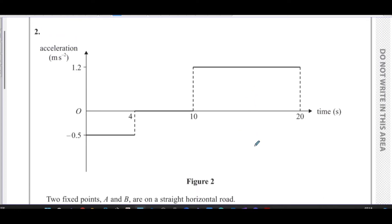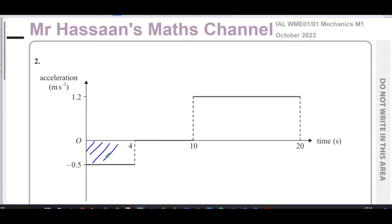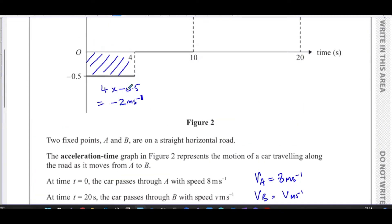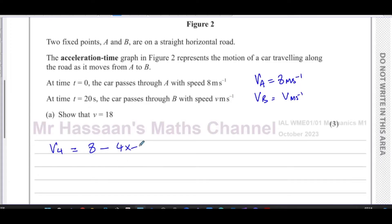The area of the first rectangle, taking sign into consideration, is 4 × (−0.5) = −2, meaning the speed drops by 2 m/s. So the velocity at 4 seconds is 8 + (4 × −0.5) = 8 − 2 = 6 m/s.